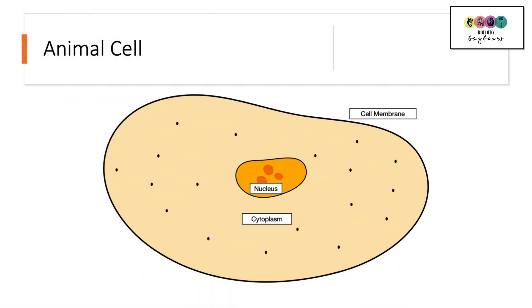So with an animal cell, you're looking to identify the cell membrane, the cytoplasm and the nucleus. And this is the type of diagram that you will be expected to be able to draw or to recognize of an animal cell viewed using a compound light microscope.